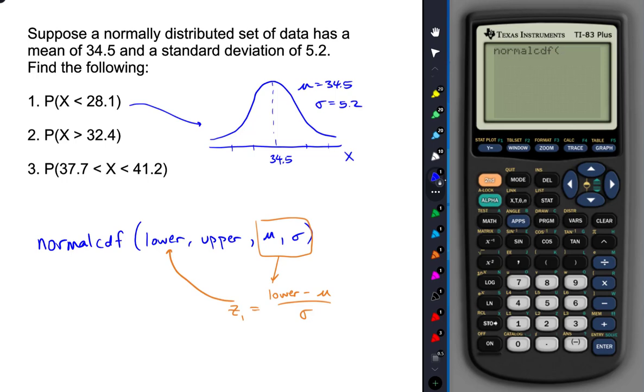So 28.1, that's somewhat less than 34.5. So I'll put that here. Now, I am looking for x values that are less than 28.1. So those would be values to the left of 28.1. I would shade that region.